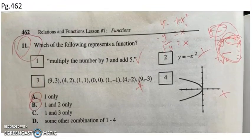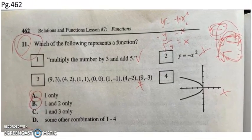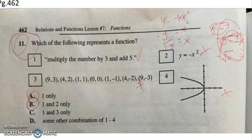The next question I want to look at is page 462, that's question 11 here. Option one here says, multiply the number by three and add five. So I could write it out as an equation, y equals 3x plus 5. Well, that looks like a linear function, actually. So that one's fine.